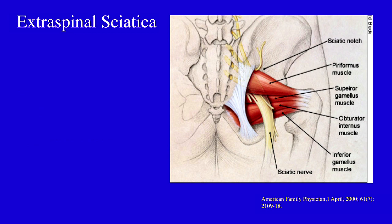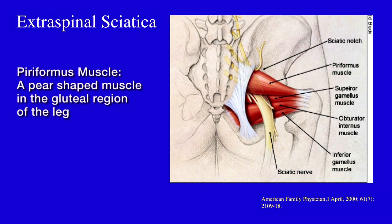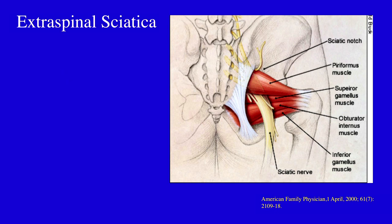Here we have the L4, L5, S1, S2, and S3 roots that come together to form the sciatic nerve. You can see how they traverse between the muscles at the notch, of which the piriformis muscle is one of the largest. With compression from contraction of these soft tissue structures, you might compress the nerve or distort it so that it is up against adjoining structures such as the ischial spine.